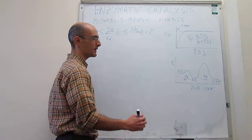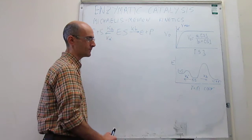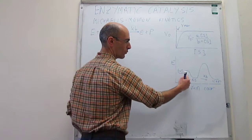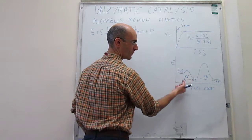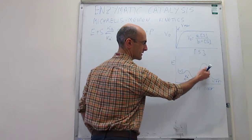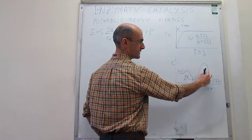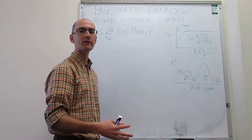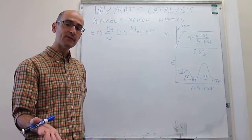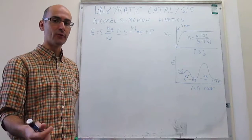The problem is that it requires an energy diagram in which, to have a pre-equilibrium where ES forms really fast before ES has a chance to go to products, the barrier for that step has to be very, very high. But that is something that is not universally true for all enzymes.